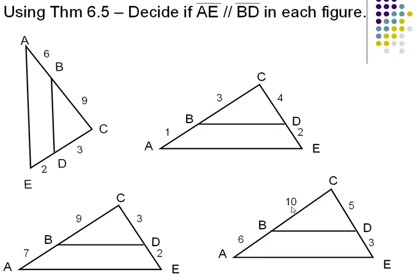In our last triangle, we have 5 to 3. Compare that to 10 to 6. Yes, 10 to 6 reduces to 5 to 3. These two lines are parallel, BD and AE in our last triangle.